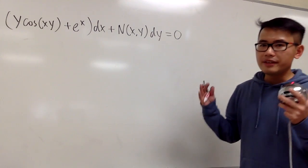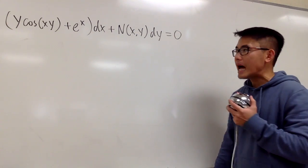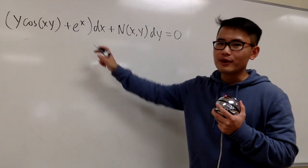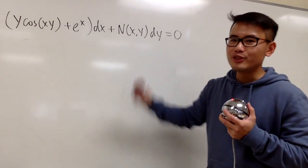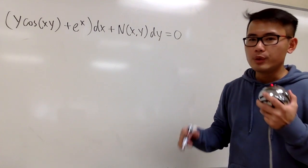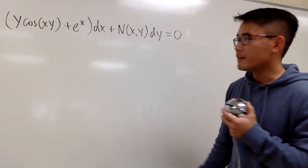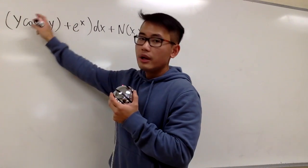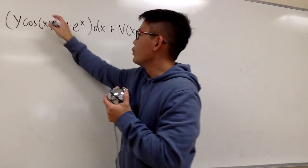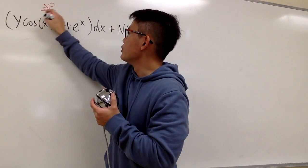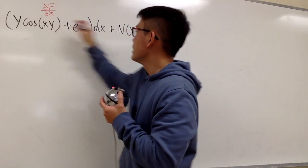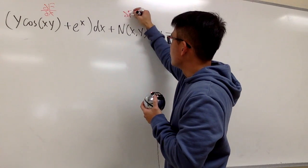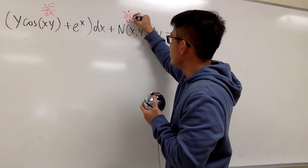So if you want to have an exact equation, that means this should come from the total differential of some function, and we call that capital F. This right here will represent the partial of F with respect to x, and this right here will represent the partial of F with respect to y.